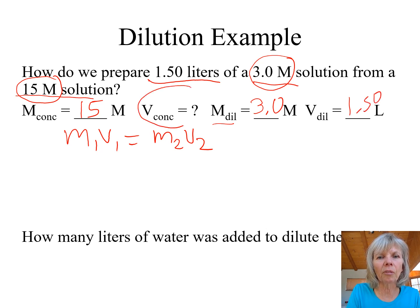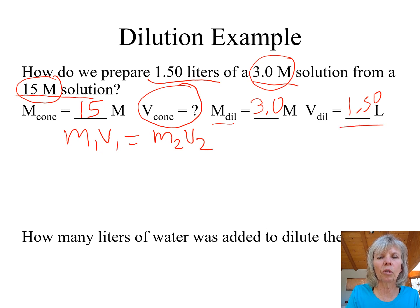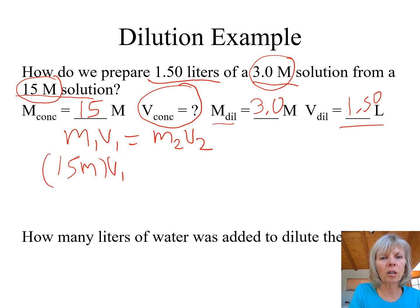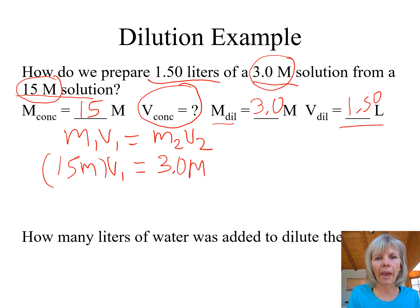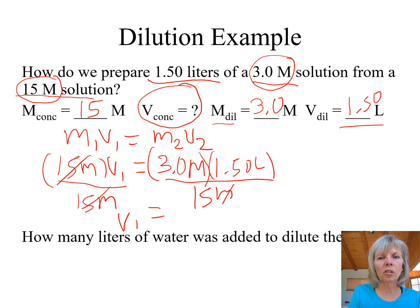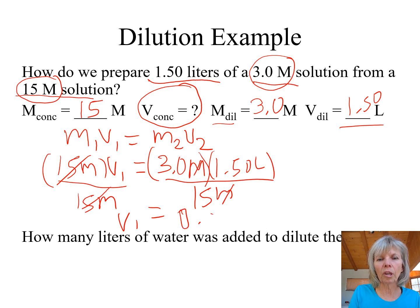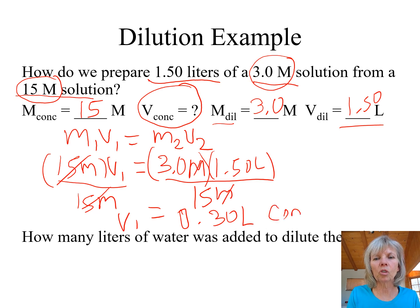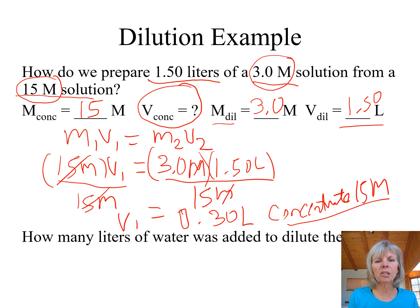We're figuring out how much volume of the concentrated 15 molar solution we need, then add water to get a total volume of 1.5 liters at a 3 molar concentration. Plugging into the formula: M1 = 15 molar, V1 = unknown, M2 = 3 molar, V2 = 1.50 liters. We divide both sides by 15 molar to isolate V1, cancel the molar units, giving us 3 times 1.5 divided by 15, which equals 0.30 liters — that's the volume of concentrated solution we'll use.